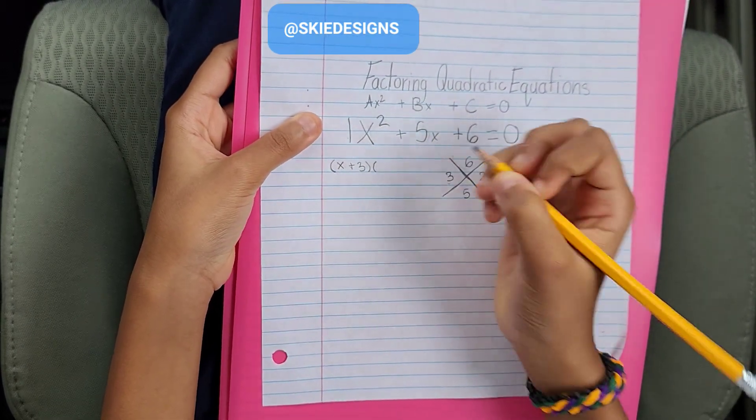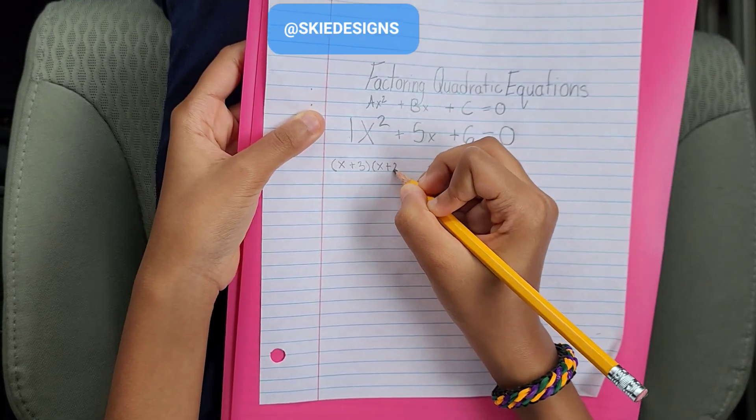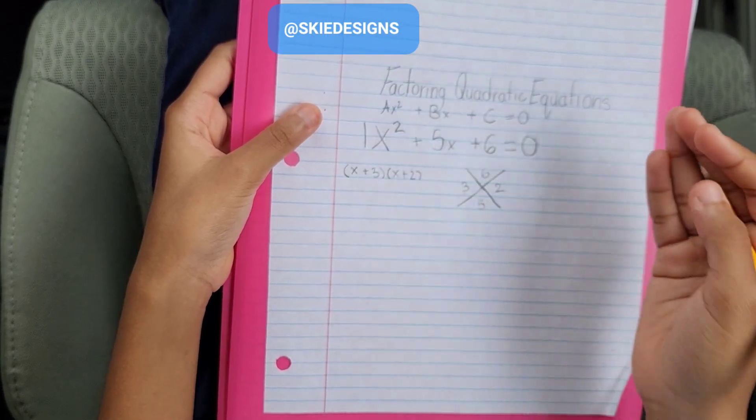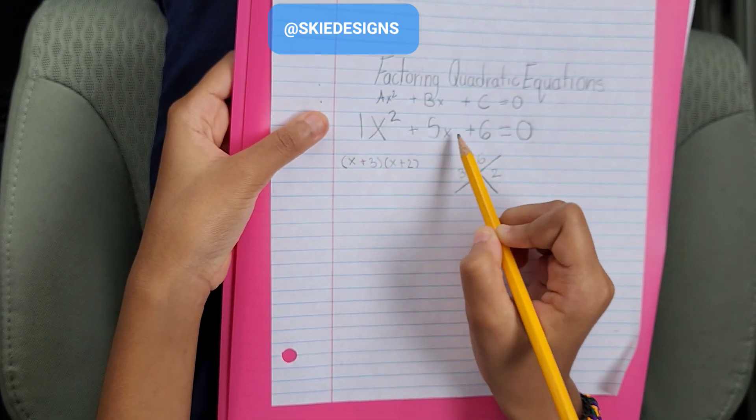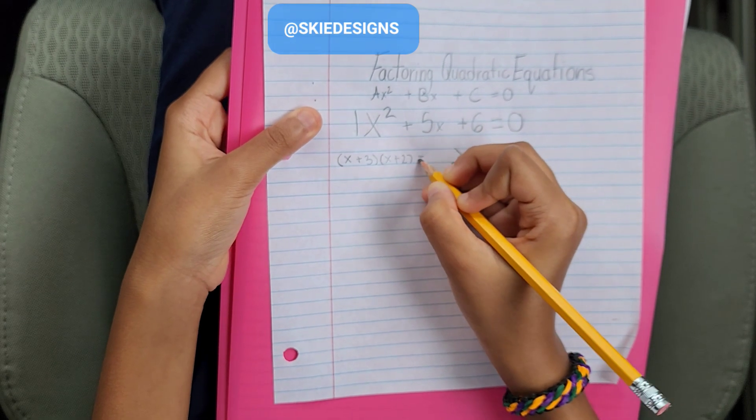Then we're going to be drawing another parentheses, x plus 2. So now that we have this parentheses, what this basically does is we're factoring the expression. So when we multiply this, we should get x squared plus 5x plus 6. Now we need our equals to 0, since we haven't removed that from the equation.